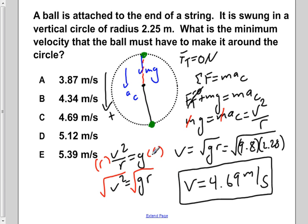This corresponds to an answer choice of C. So the velocity that the ball must have to make it round a circle of radius 2.25 meters is answer C, 4.69 meters per second.